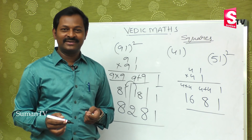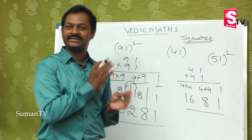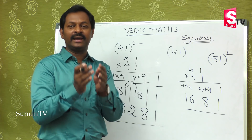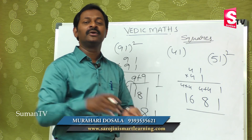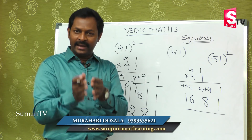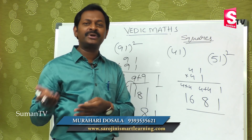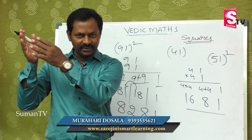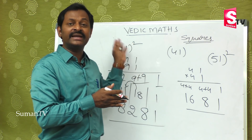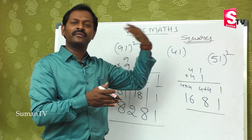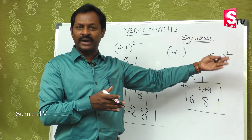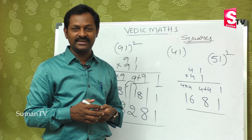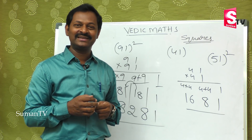So, squares can also be done in the simplest form. If numbers start with 1, we start with one, then add, then multiply. If numbers end with 1, we multiply first, then add, then write one at the end. Hope you understood this class. Thank you. We will see you in the next class.